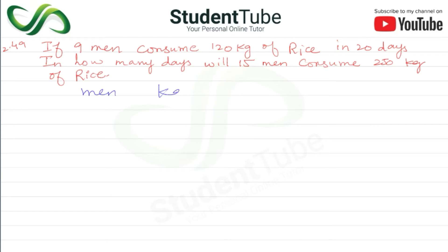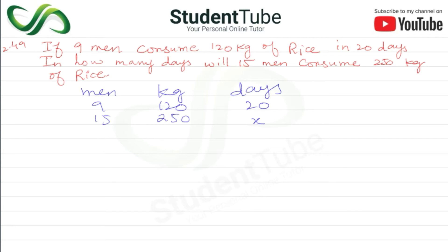We write the columns: men, kg of rice, and days. So 9 men, 120 kg — how many days? And 15 men, 250 kg. Now see their relation: men increase from 9 to 15, so days will be less. And kg increases, so this relation will be inverse.